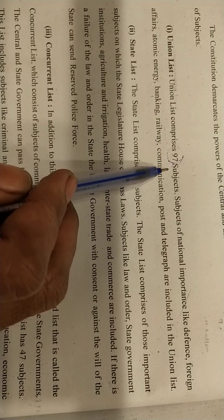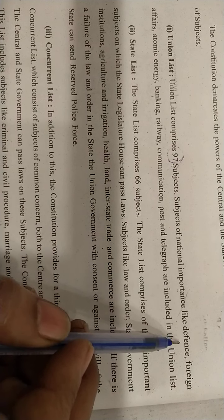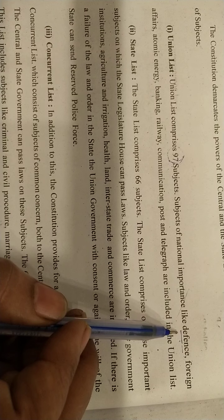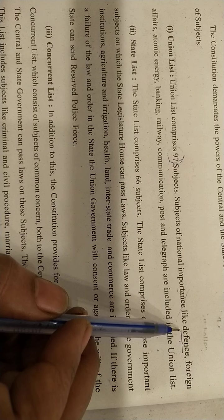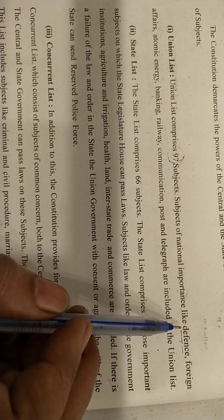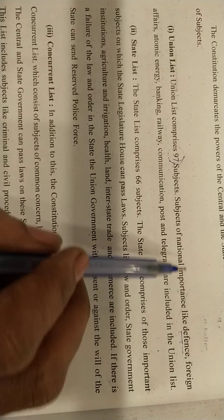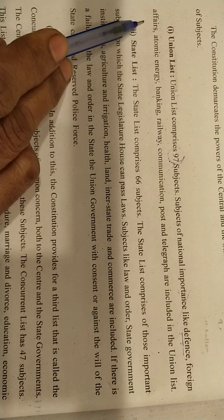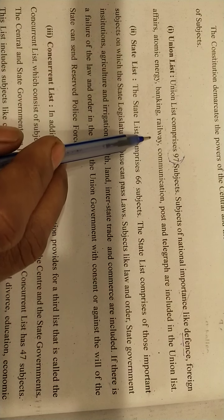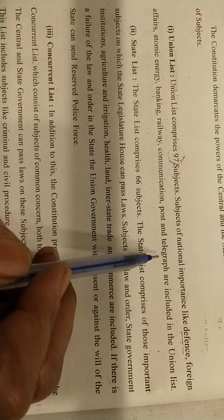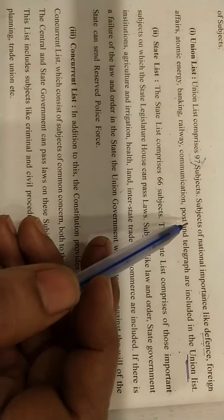The Union List has 97 subjects that only the central government handles — like defense (how many soldiers to keep at borders, what weapons are needed), foreign affairs, atomic energy, banking, railway, communication, post, and telegraph. These 97 subjects are included in the Union List.